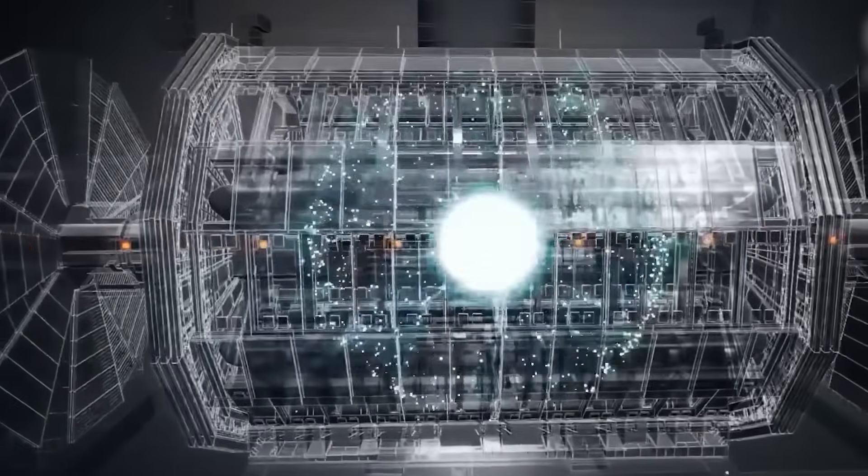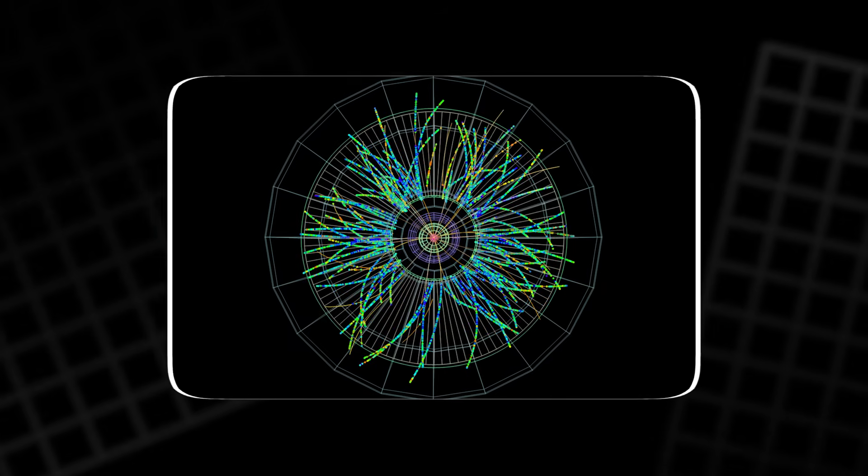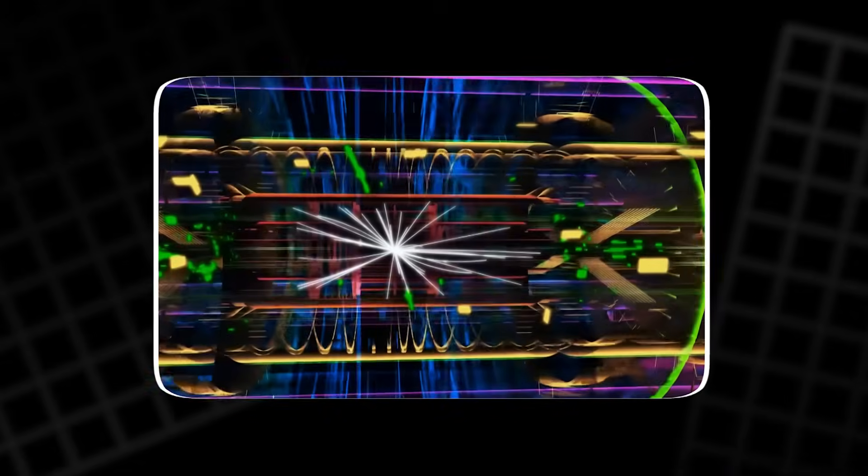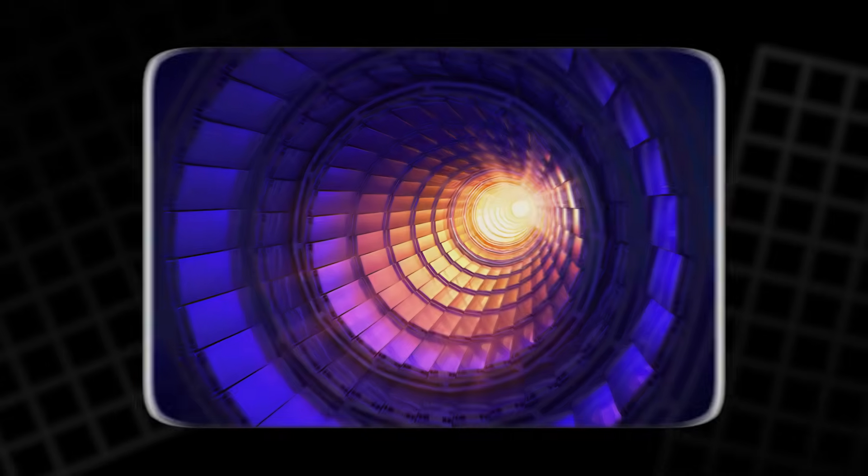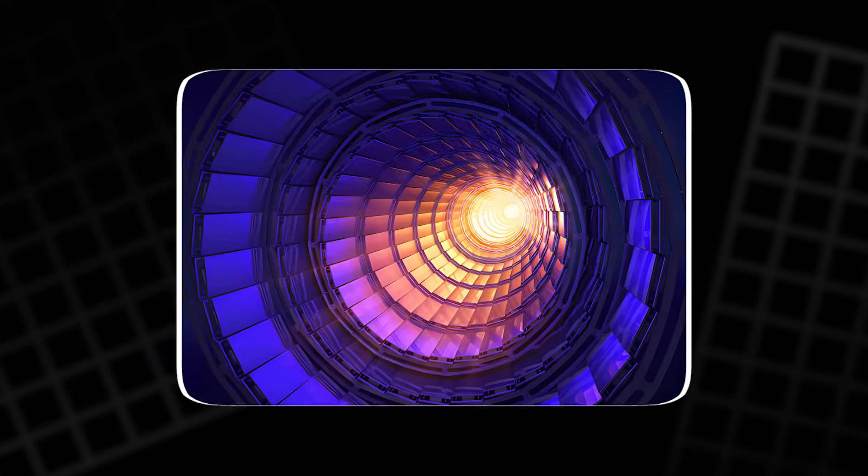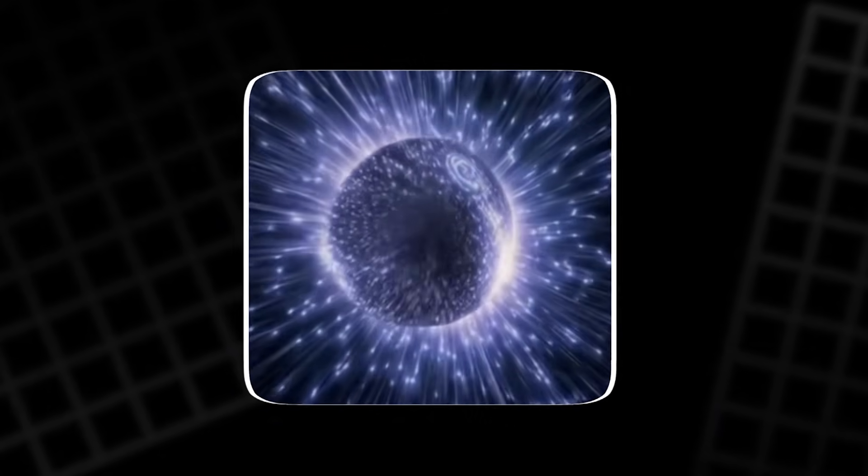One of the most spine-chilling theories tied to CERN involves strange matter, or what scientists call strangelets. It is a hypothetical form of matter so stable and exotic that if it ever touched ordinary matter, it might convert everything it contacted into more strange matter. Think of it as a cosmic infection that starts in one spot and spreads across the world.